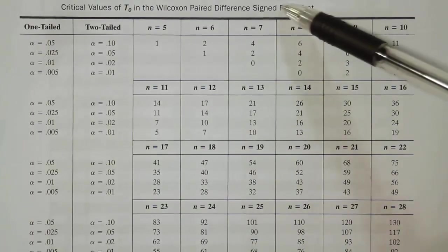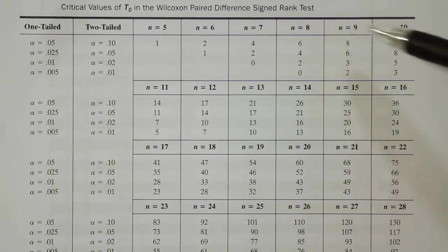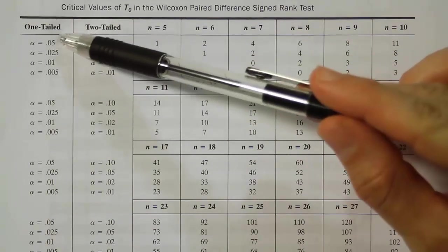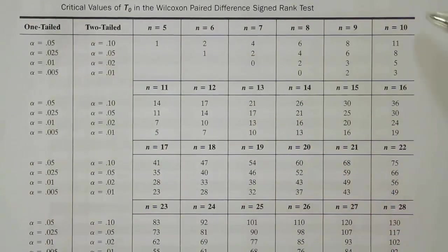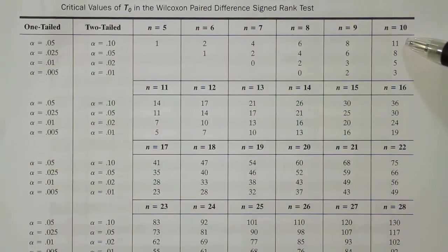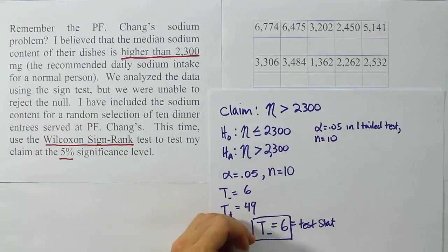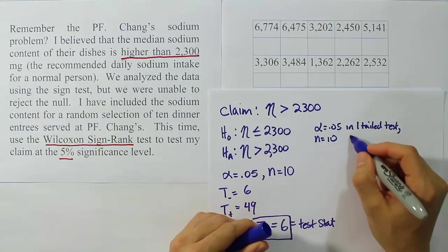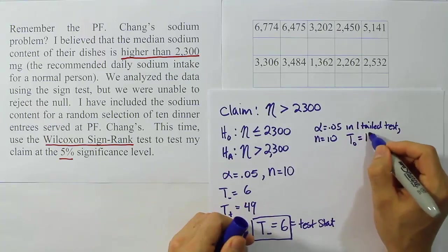So we're on our signed-rank test table. We're going to where n is 10 and 0.05 in one tail. So 0.05 in one tail is the first value. And n is 10. That's going to mean our T_0, our T critical value, is going to be 11. So T_0 is 11.